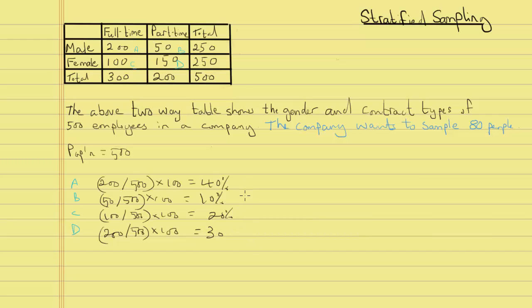Group D is 150 divided by 500 multiplied by 100 which gives us 30%. If we add the percentages we get 100%. Now what we want to do is find these percentages of 80. So we want to find 40% of 80.